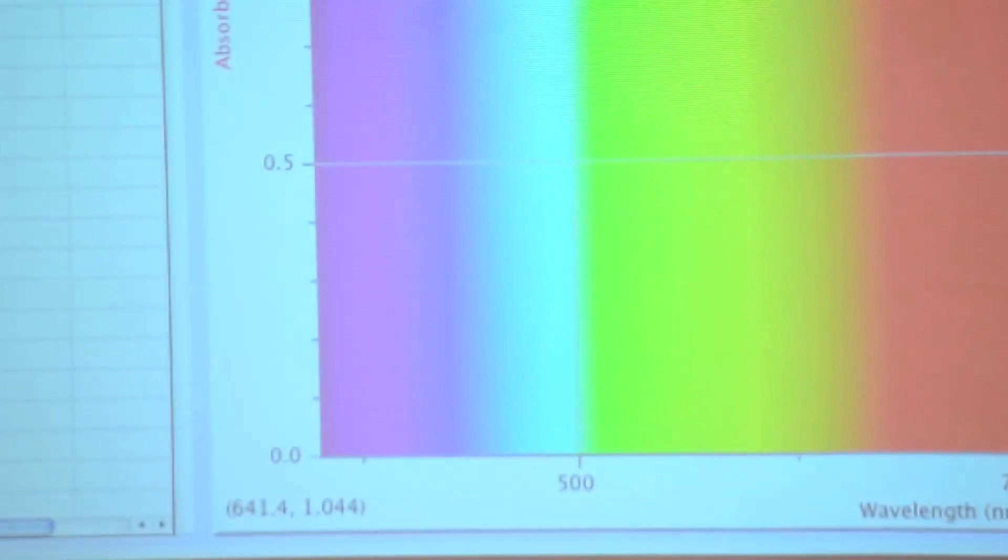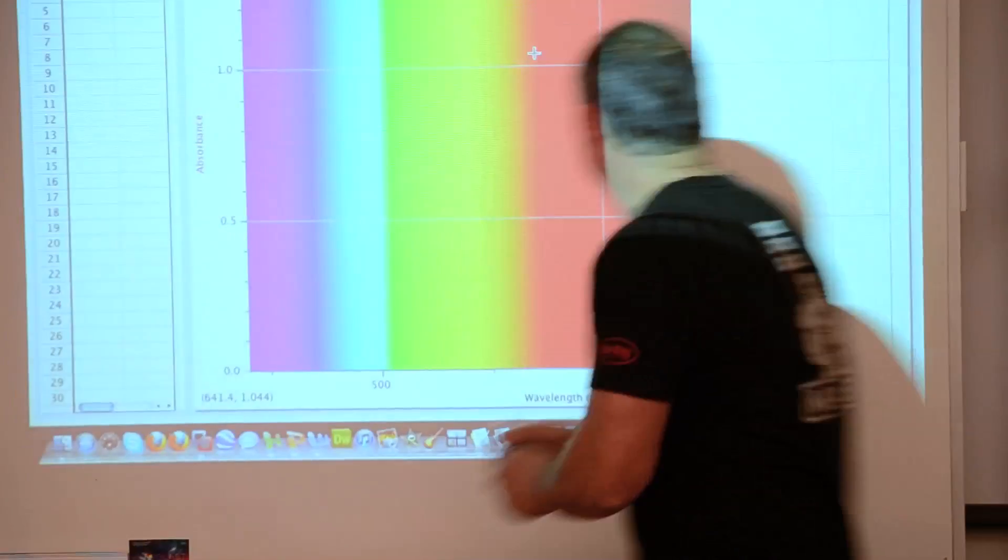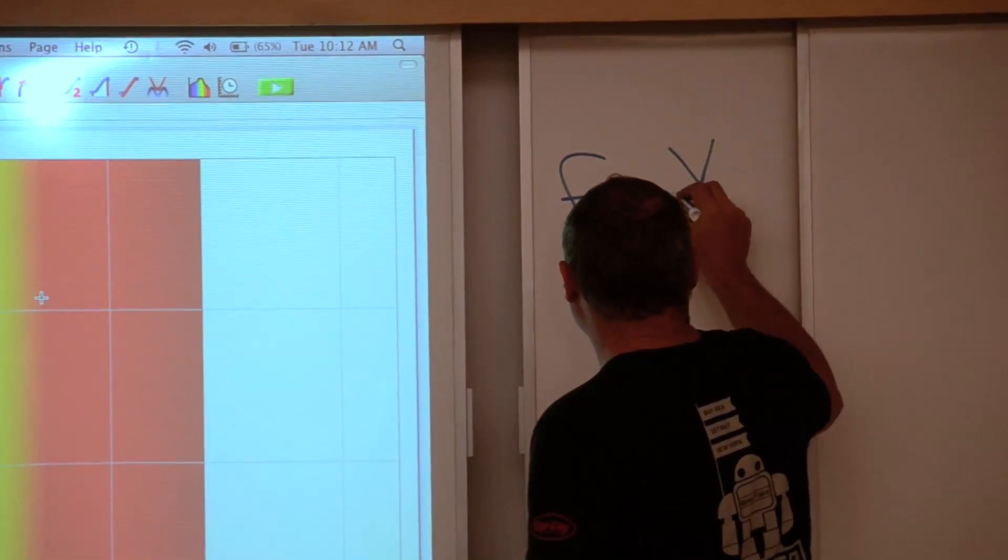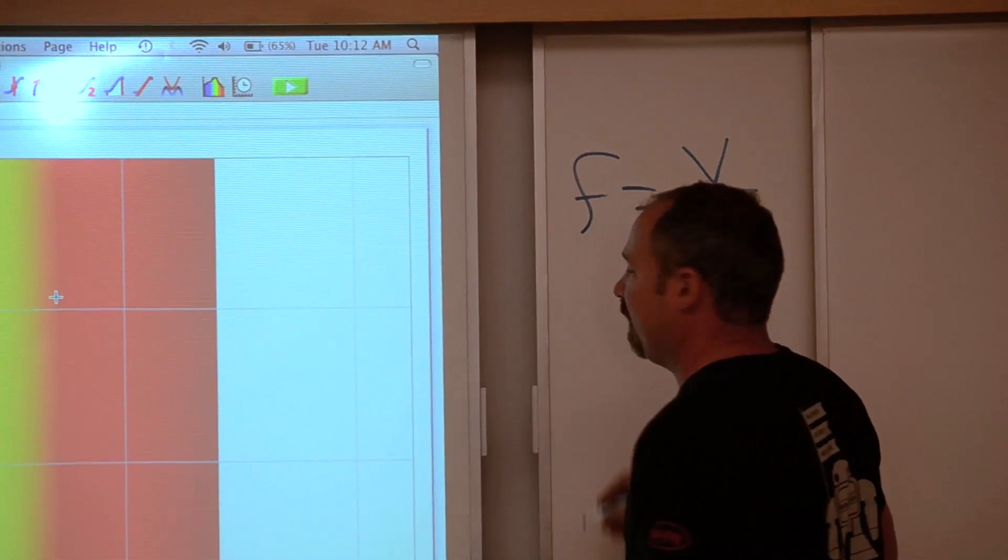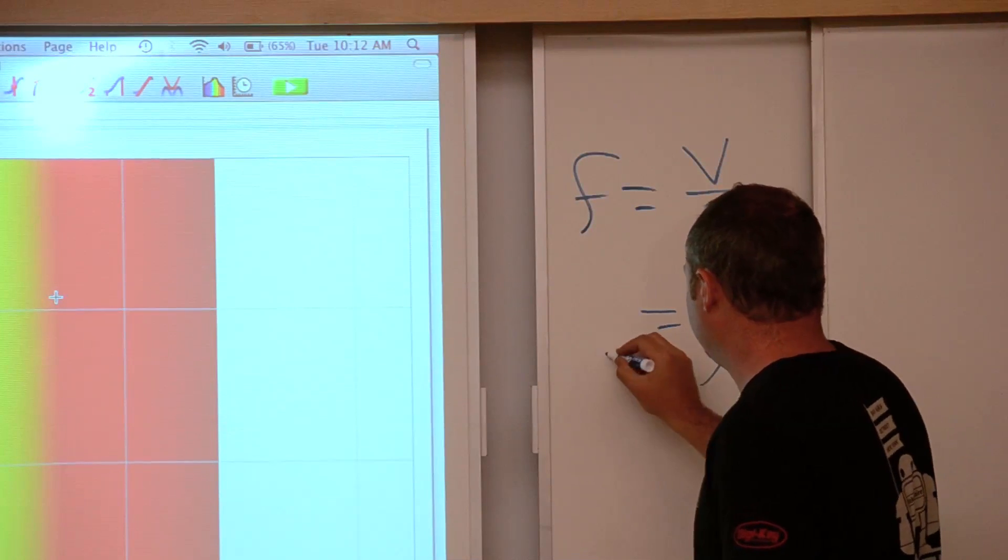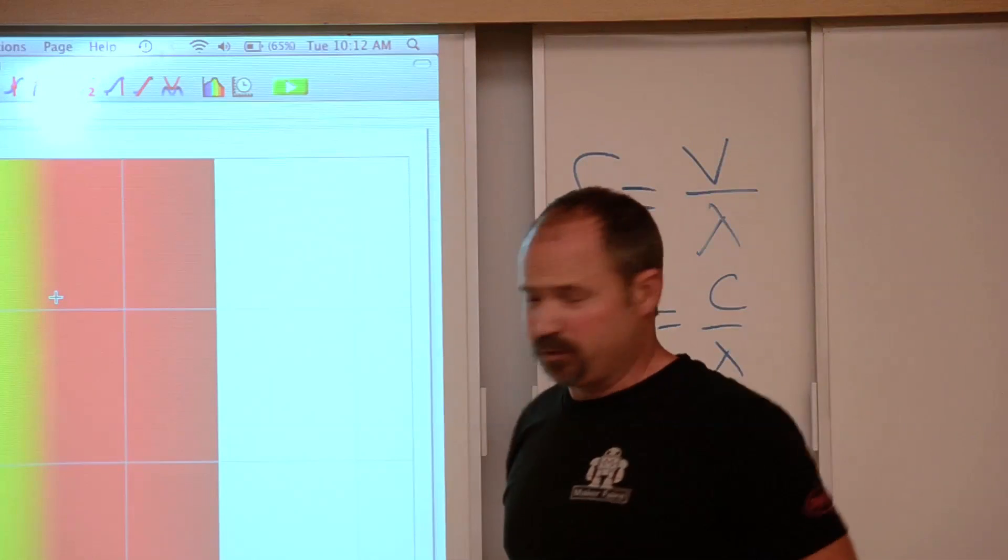Now you may be looking at these numbers here. These are wavelengths. Remember that the frequency is equal to the speed of the wave divided by the wavelength. In this case we're talking about light, so it's the speed of light divided by the wavelength. So the larger the frequency, the smaller the wavelength.